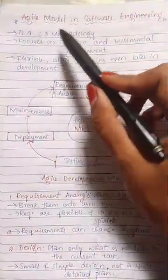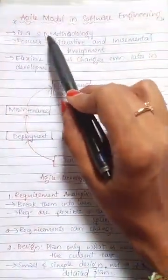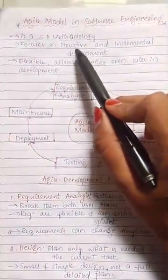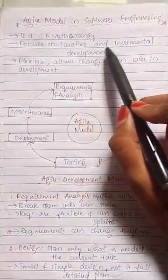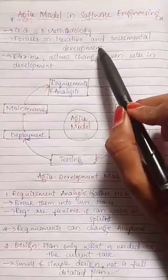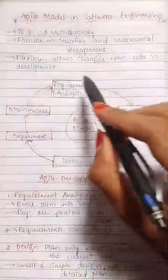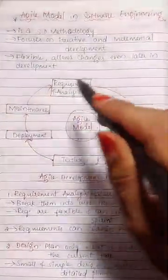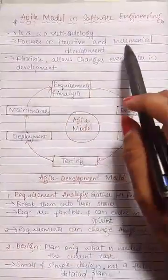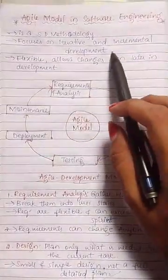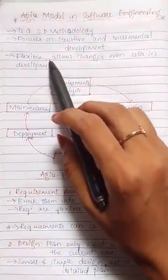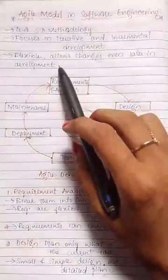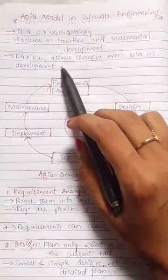The Agile model is a software development methodology focused on iterative and incremental development. Iterative means looping through small cycles, and incremental development. It is very flexible and allows changes even later in the development.